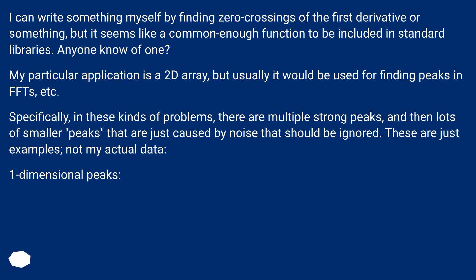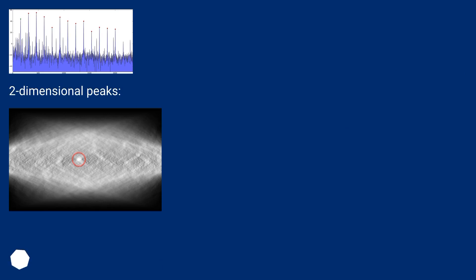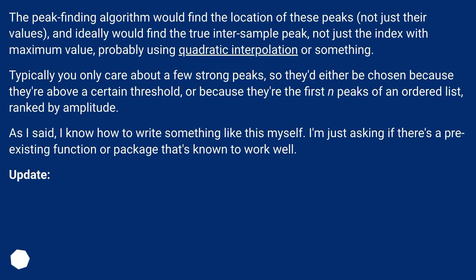One-dimensional peaks. Two-dimensional peaks. The peak finding algorithm would find the location of these peaks, not just their values, and ideally would find the true inter-sample peak, not just the index with maximum value, probably using quadratic interpolation or something. Typically you only care about a few strong peaks, so they'd either be chosen because they're above a certain threshold, or because they're the first N peaks of an ordered list, ranked by amplitude.